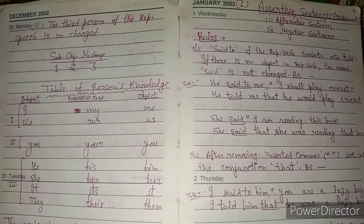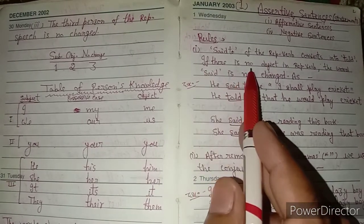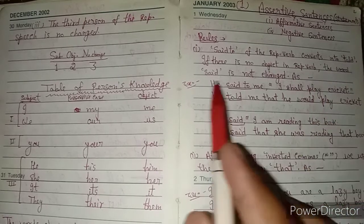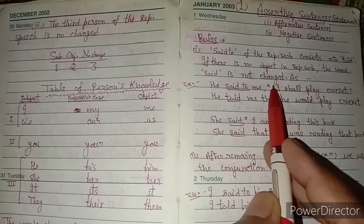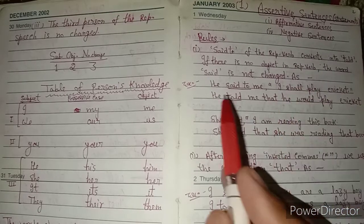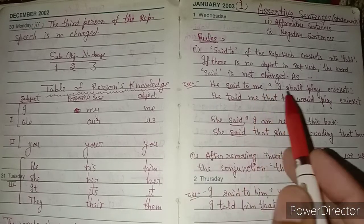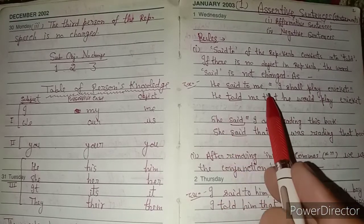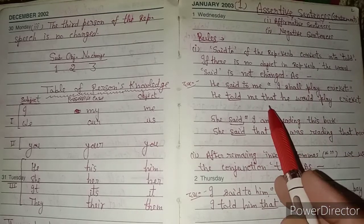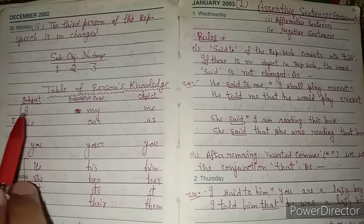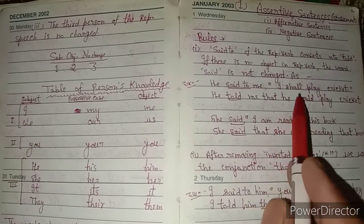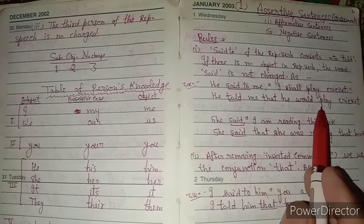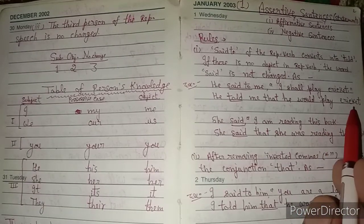If there is no object in the reporting verb, then the word 'said' is not changed — 'said' stays as 'said'. Example: 'He said to me — I shall play cricket.' Here 'said to' becomes 'told', 'me' stays 'me', inverted commas are removed, conjunction 'that' is added. 'I' — first person — changes according to subject, which is 'he', so 'I' becomes 'he'. 'Shall' becomes 'would' because the subject is 'he'. 'Play cricket' stays the same.